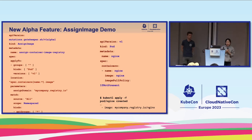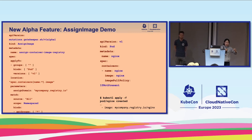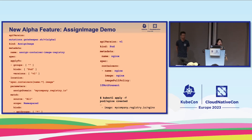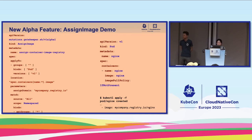Here is an example of how you can use the AssignImage mutator to mutate a resource being deployed to your Kubernetes cluster. Let's say your company has people pulling from Docker Hub and you have a mirror in the company — you deploy this to your cluster and say for all pods and all images, replace the registry with your company's registry. This ensures people are not pulling from random Docker Hub repos.